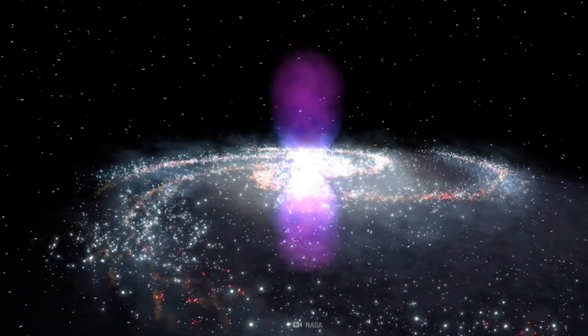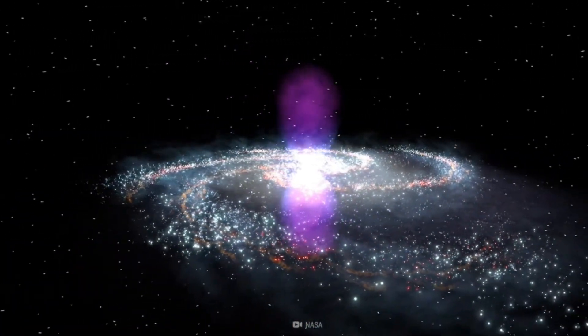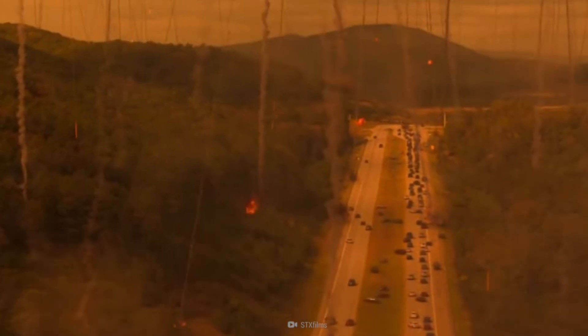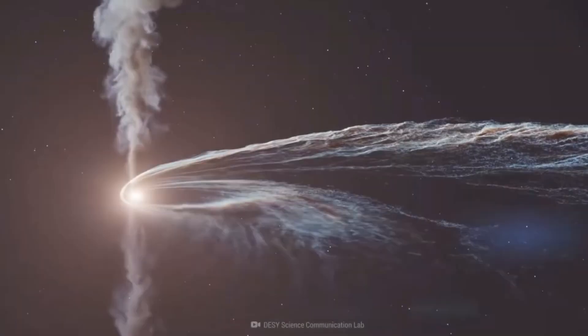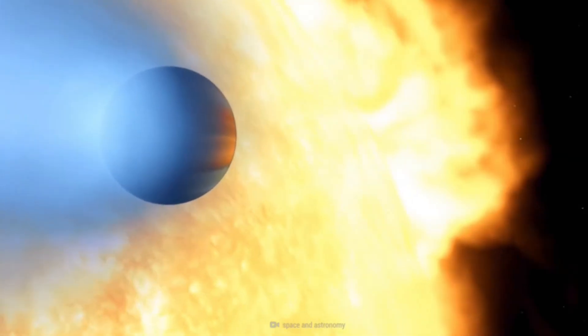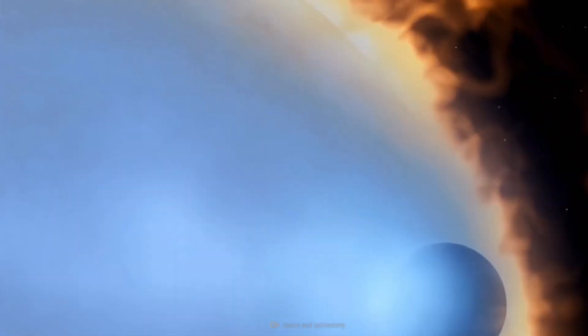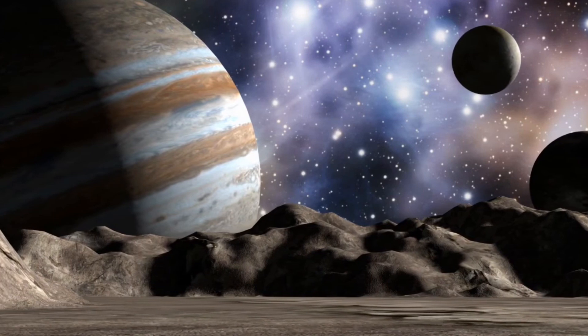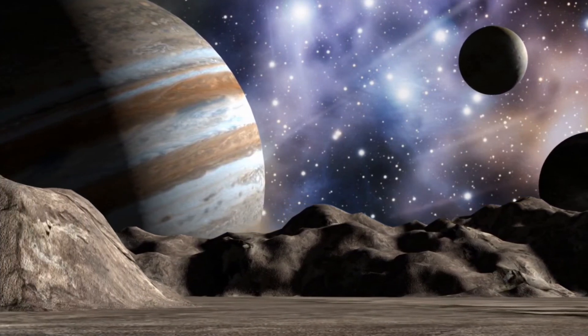Next, it would devour the Kuiper Belt beyond Neptune, flinging thousands of frozen objects in our direction. Then come the planets. Neptune and Uranus would be swallowed up. Saturn and Jupiter, torn apart molecule by molecule. Moons, asteroids, space probes—all would vanish.